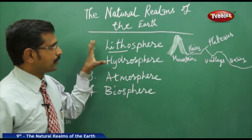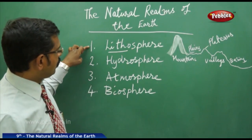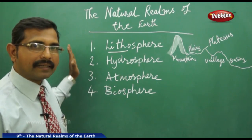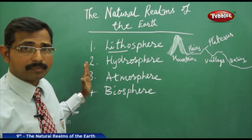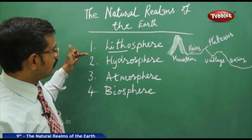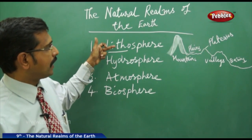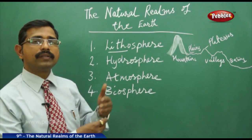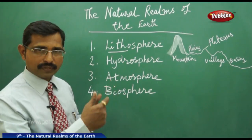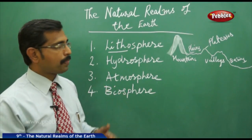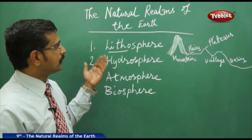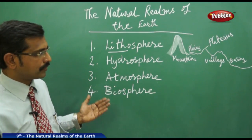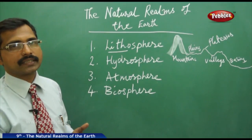All these — lithosphere, atmosphere, and biosphere — are interrelated and highly influenced by each other. For example, dust from the lithosphere mingles with the air, which is part of the atmosphere. So these four spheres — lithosphere, hydrosphere, atmosphere, and biosphere — are interrelated and influence each other.